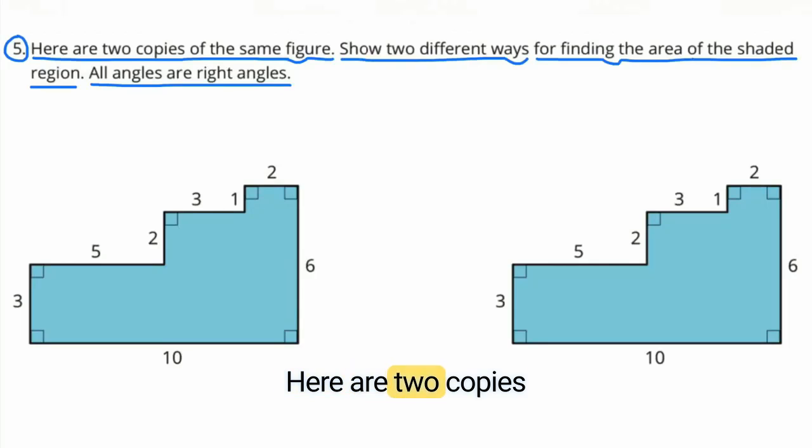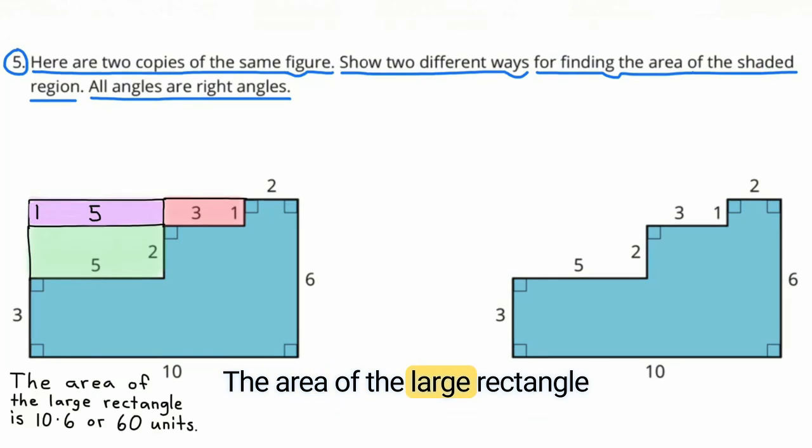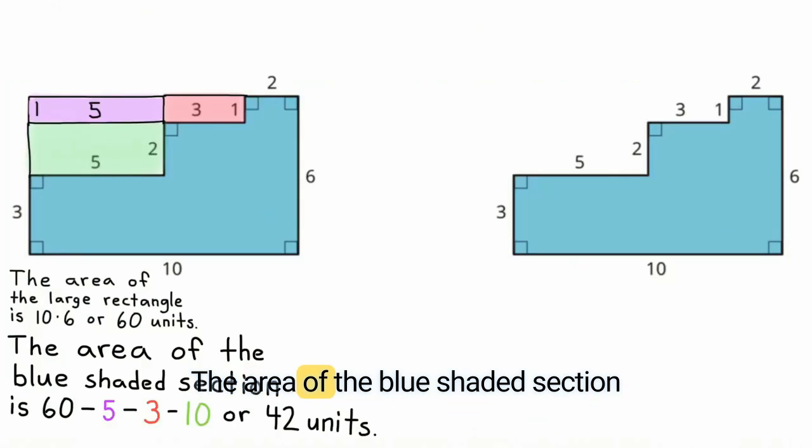Here are two copies of the same figure. Show two different ways for finding the area of the shaded region. All angles are right angles. The area of the large rectangle is 10 times 6 or 60 units. The area of the blue shaded section is 60 minus 5 minus 3 minus 10 or 42 units.